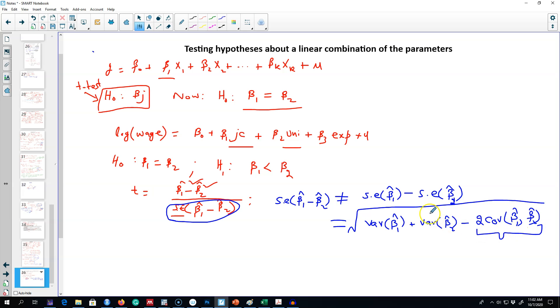...is calculated based on how beta_1 and beta_2 are related to each other, so we have to take care of this term. Most of the time, in the regression output you will find standard error of beta_1 and standard error of beta_2, but you will not find covariance between beta_1 and beta_2 in the regression output, and you have to calculate it manually.